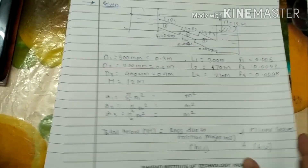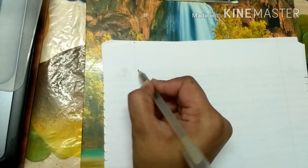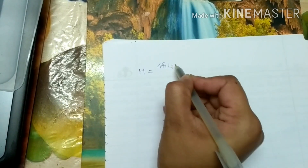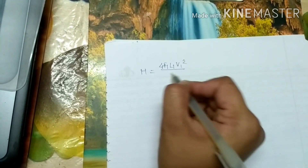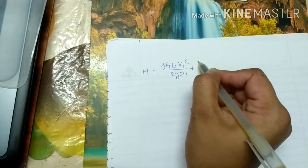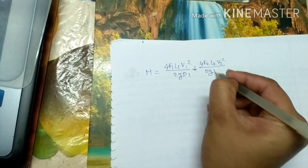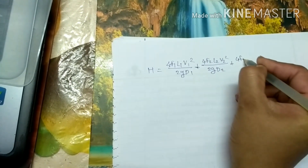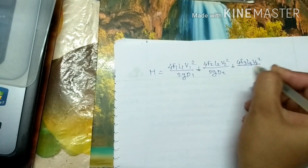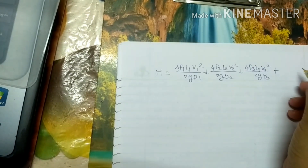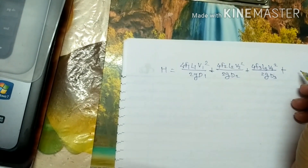Write down the formula. As we have seen there are three pipes, so h is equal to the sum of major losses for all three pipes: 4f1·L1·v1² / (2g·d1) + 4f2·L2·v2² / (2g·d2) + 4f3·L3·v3² / (2g·d3). This is the total major loss. Now how many minor losses are there?